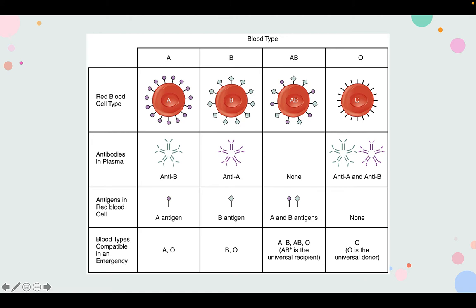Similarly, an individual with type B blood has preformed anti-A antibodies. Individuals with type AB blood have both antigens on the glycocalyx, and they don't have preformed antibodies to either type, because they would trigger an immune response against their own cells if they did.